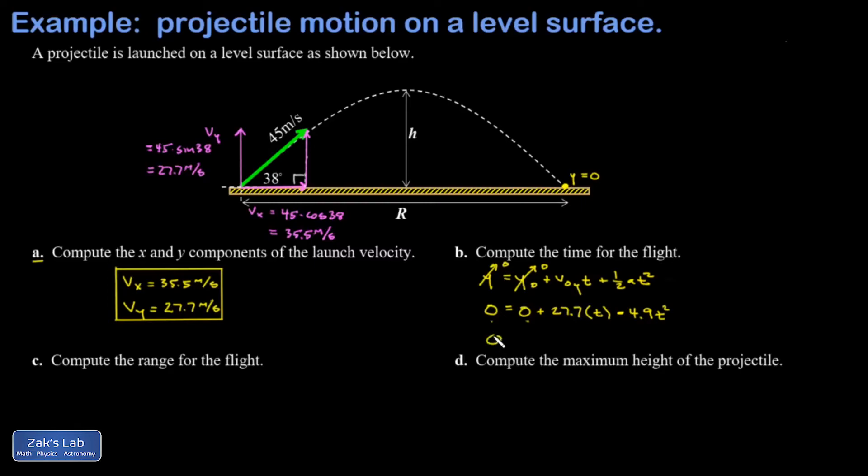I can solve this quadratic equation simply by factoring. I pull a t out and there's two solutions to this equation. The easy one is that t is equal to zero solves this equation.